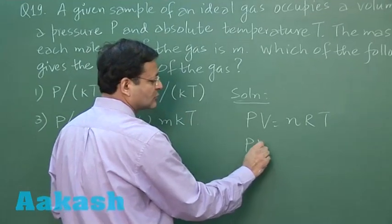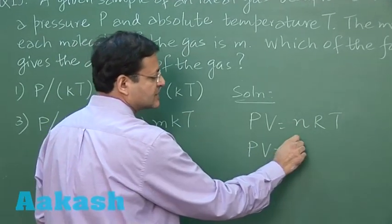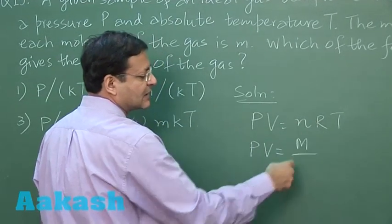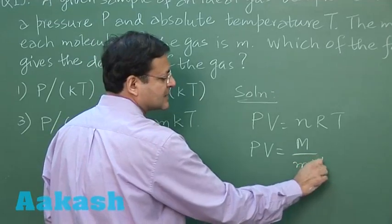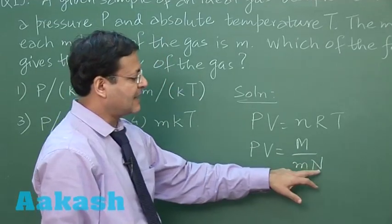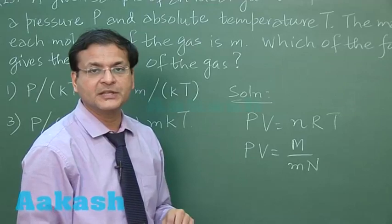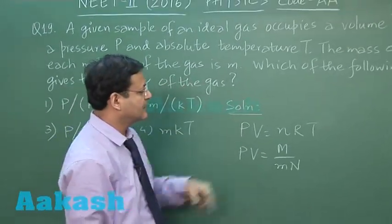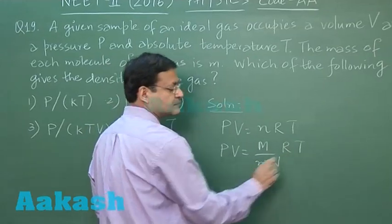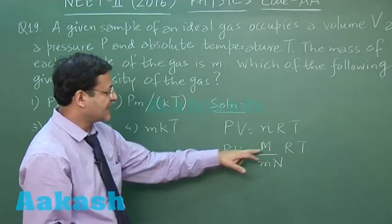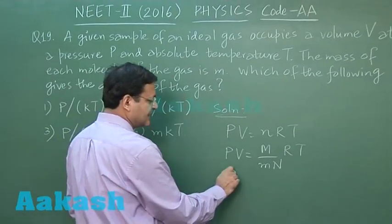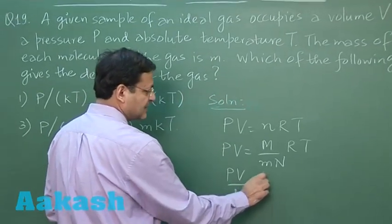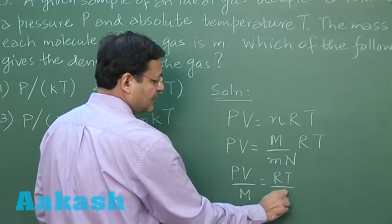So if you manipulate this expression, you can also say this number of moles is mass upon molecular weight, or molecular weight can be written as Avogadro number multiplied by mass of each molecule, that has been given a small m, into r into T. And if this m by V, if you take that makes it density. So P by capital M that makes it RT by small m into capital M.